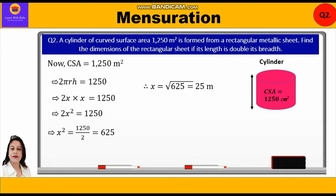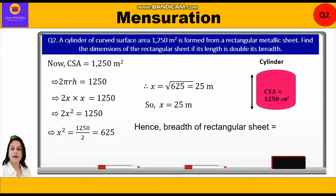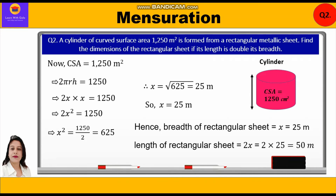So x = √625 = 25 metres. Therefore breadth of the rectangular sheet equals x = 25 metres, and length equals 2x = 2 × 25 = 50 metres.